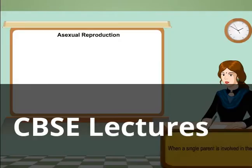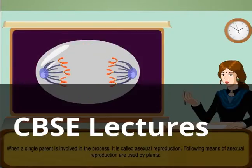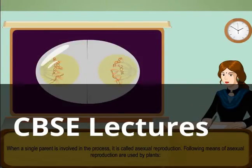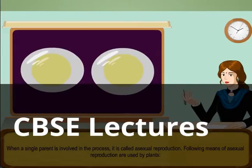Asexual reproduction: when a single parent is involved in the process, it is called asexual reproduction. The following means of asexual reproduction are used by plants.